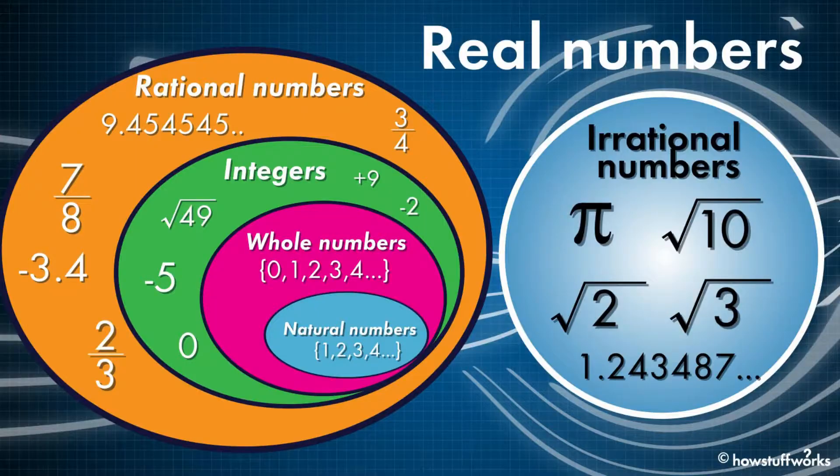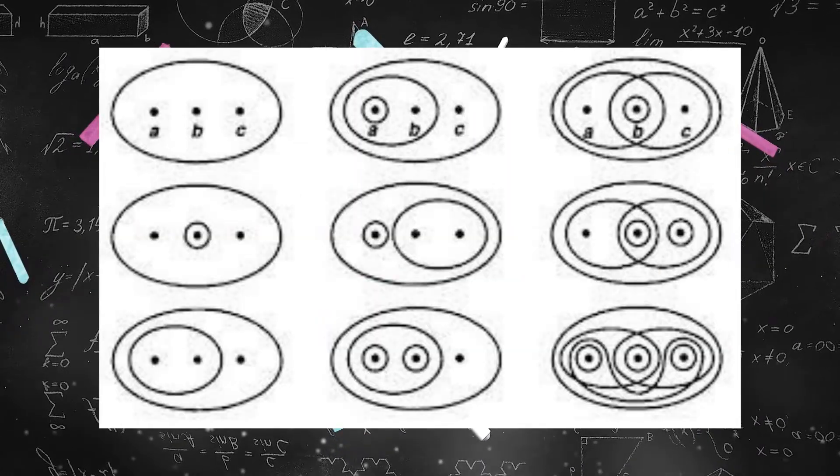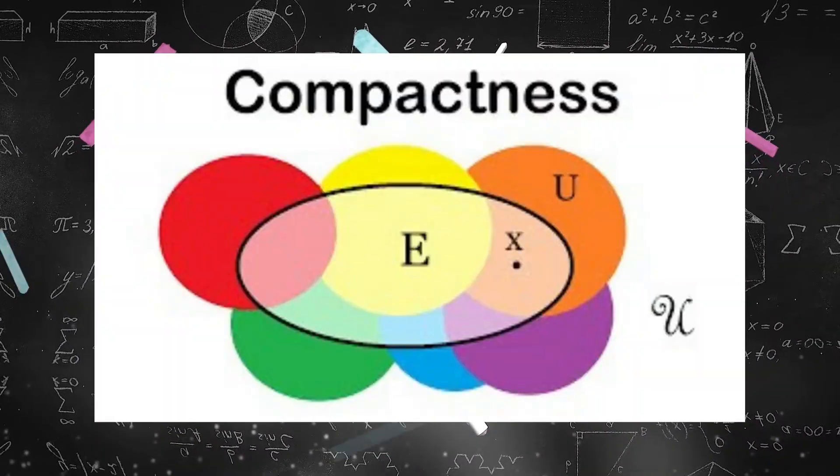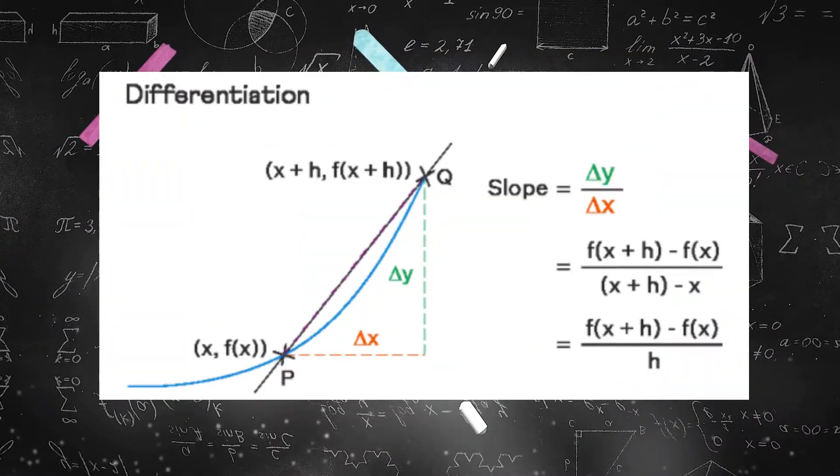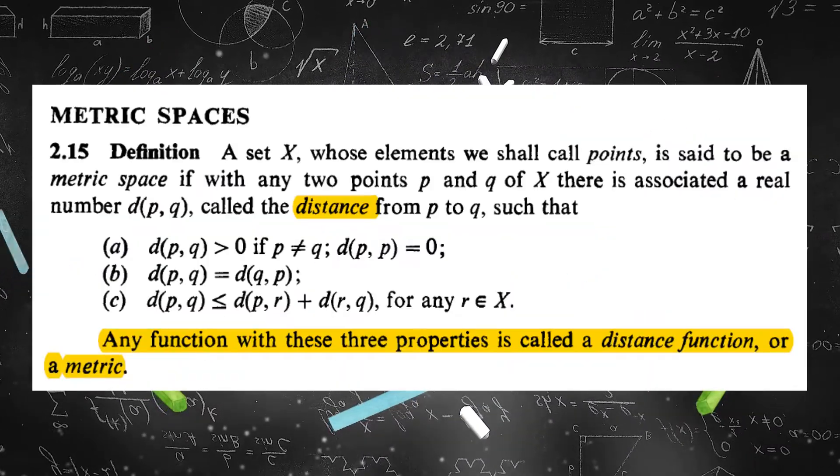Some particular concepts of real analysis are real numbers, order properties of real numbers, topological properties of real numbers, sequences, limits and convergence, compactness, continuity, differentiation and integration, series, distribution, and metric spaces.